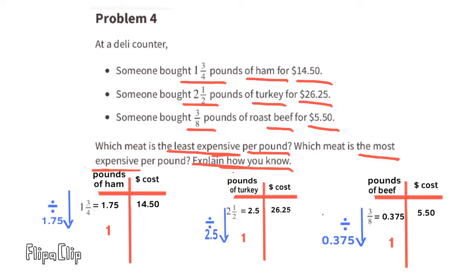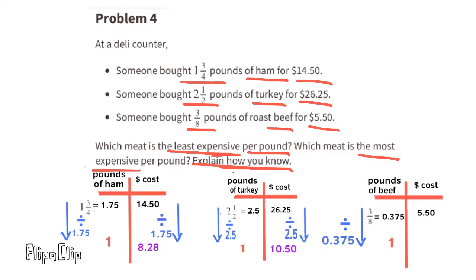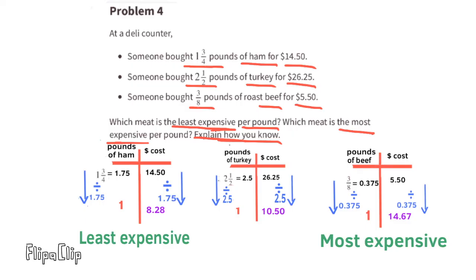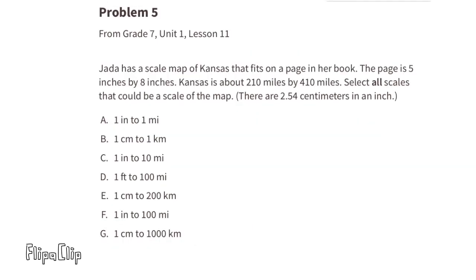For the ham: $14.50 divided by 1.75 equals $8.28 per pound. For the turkey: $26.25 divided by 2.5 equals $10.50 per pound. For the roast beef: $5.50 divided by 0.375 — that's the most expensive at $14.67 per pound. The least expensive was the ham at $8.28 per pound.